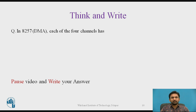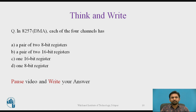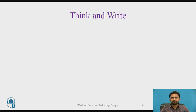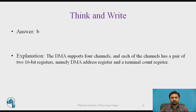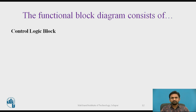Here is a question for you. In 8257, each of the four channels has — options are: A) a pair of two 8-bit registers, B) a pair of two 16-bit registers, C) one 16-bit register, D) two 8-bit registers. The answer is B. The DMA supports four channels and each channel has a pair of two 16-bit registers, namely the DMA address register and the terminal count register.